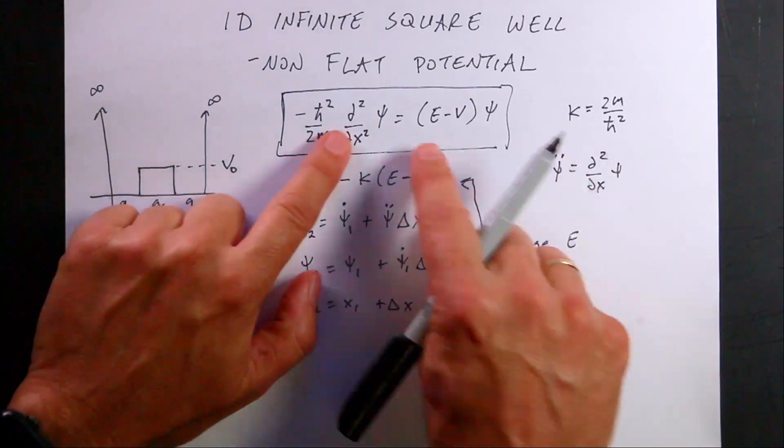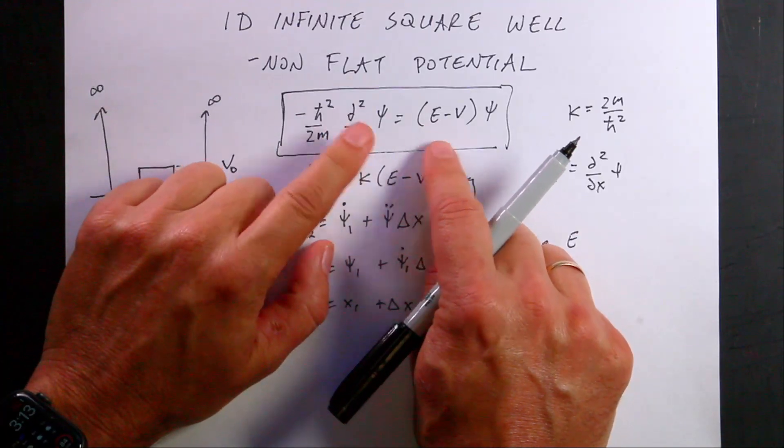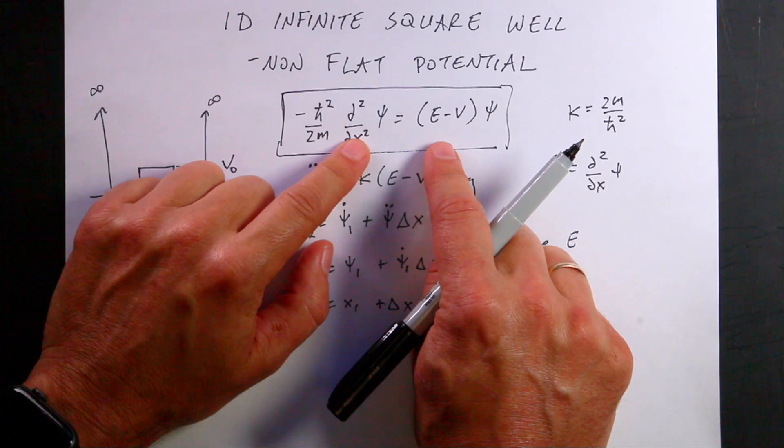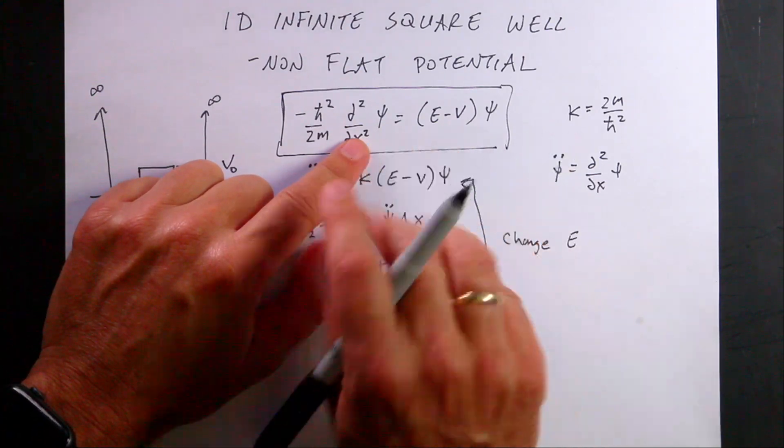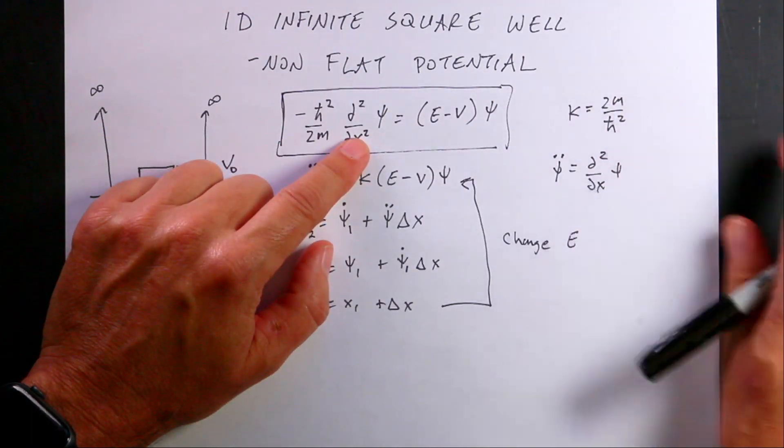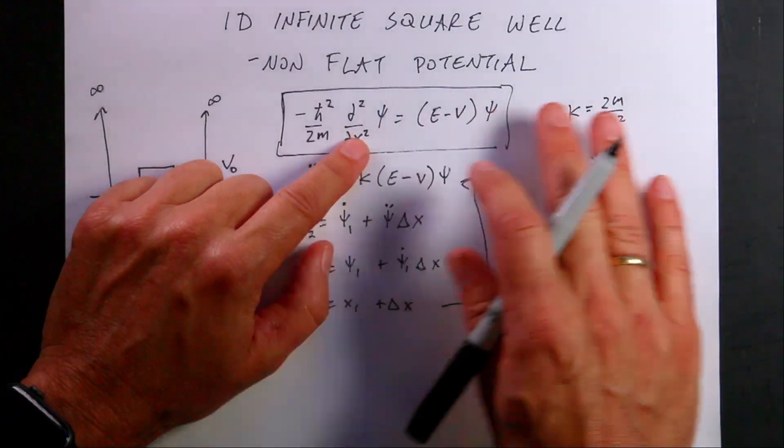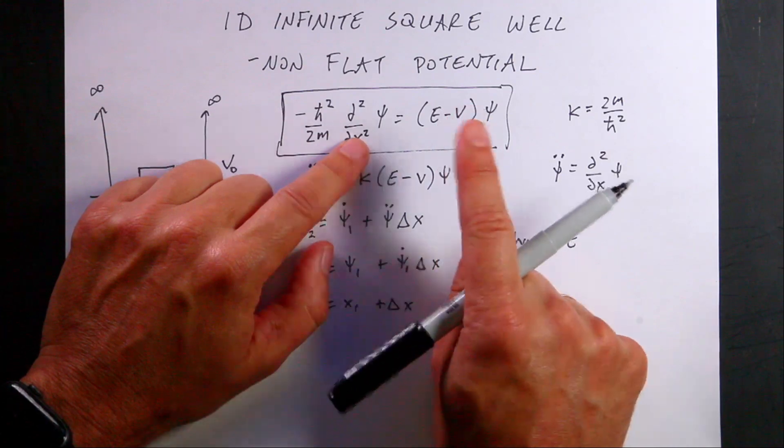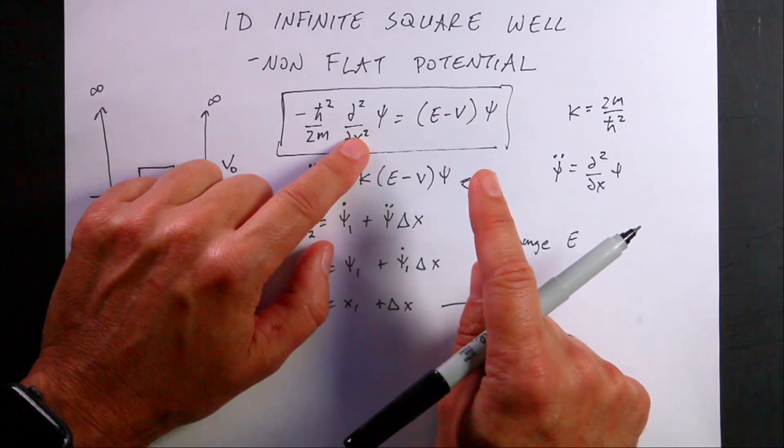So the problem here with this differential equation is that I can easily solve it. But you really need to know two things. If I want to solve it and just plot it out for all x's that I don't know yet, if I want to work my way through x's, then I need the initial x, the psi at x equals 0, and psi dot at x equals 0.